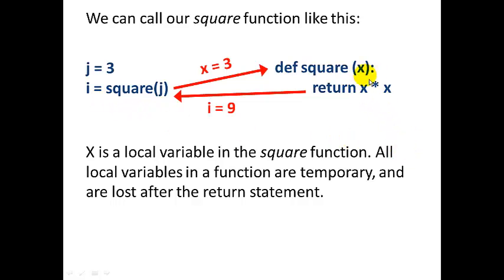Now x is a local variable inside the square function. All local variables in a function are temporary and are lost after the return statement. So after we return from the square function, x is no longer usable. x is gone.